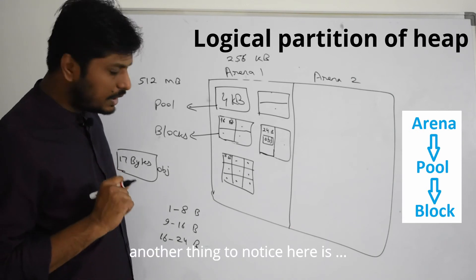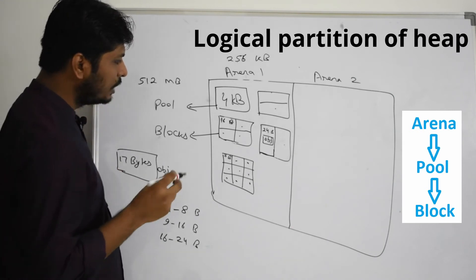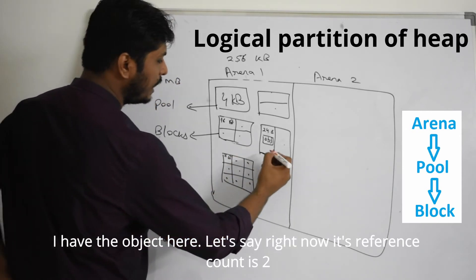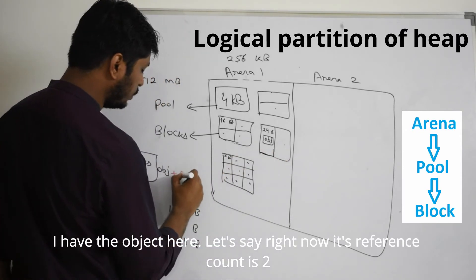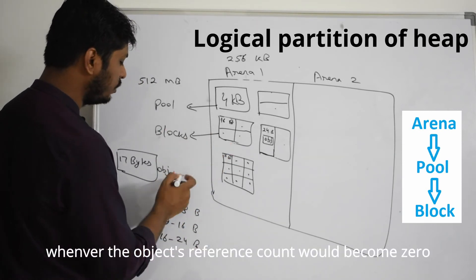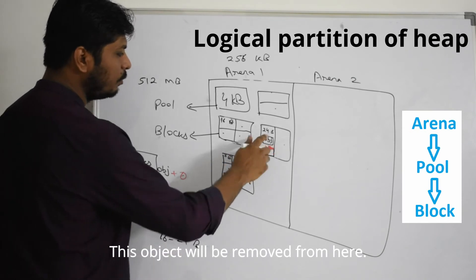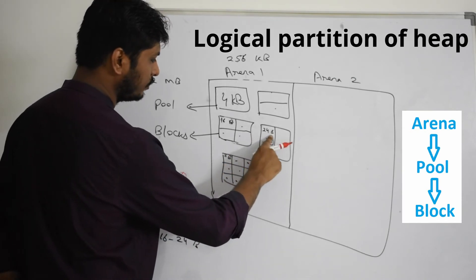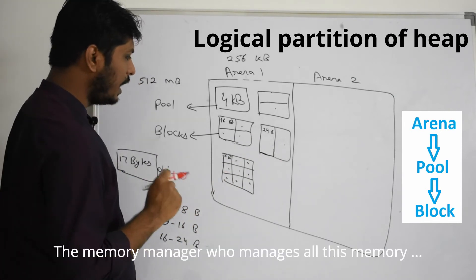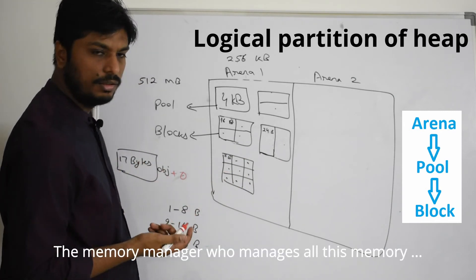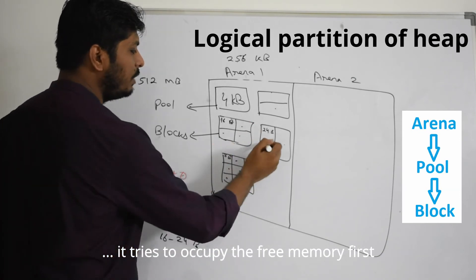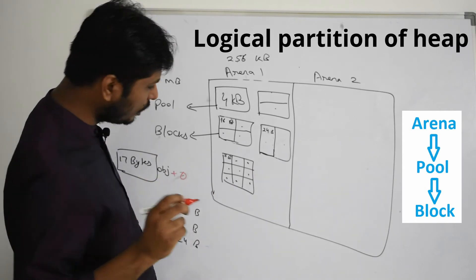Another thing to notice here is, let's say I have this object here and right now its reference count is 2. Whenever its reference count will become 0, this object will be removed from here. And this memory location will become free again. And the memory manager tries to occupy the free memory first.